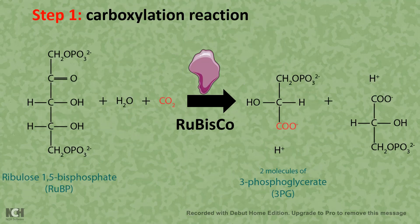Stage one is carbon fixation. In the carbon fixation reaction, the first compound that takes up CO2 is ribulose bisphosphate, or RuBP. The key enzyme participating in this process is Rubisco — ribulose bisphosphate carboxylase. As the name suggests, it performs a carboxylation reaction, attaching a carboxyl group, and ultimately forms two molecules of 3-phosphoglycerate.